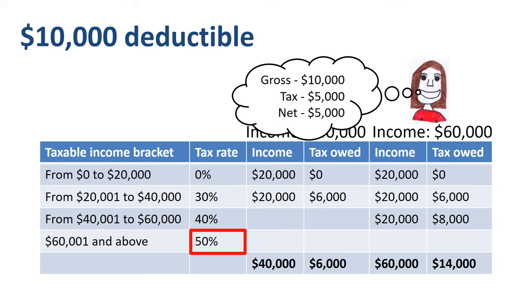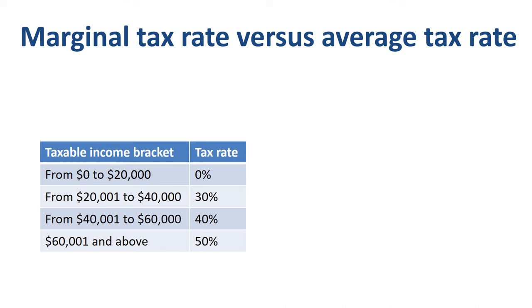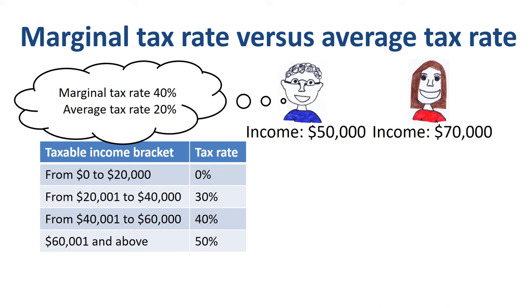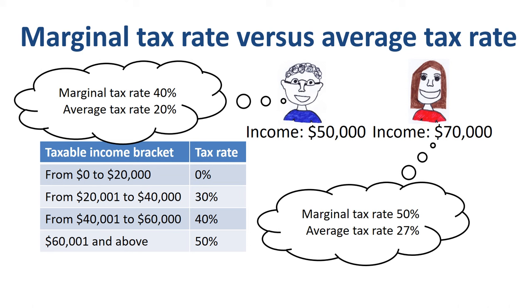How close can the marginal tax rate and the average tax rate get? In our example, John has a marginal tax rate of 40% and an average tax rate of 20%, while Jane has a marginal tax rate of 50% and an average tax rate of 27%. Your marginal tax rate goes up when additional taxable income goes into the next higher tax bracket. Your average tax rate goes up when the mix between income taxed at low rates versus income taxed at high rates changes.